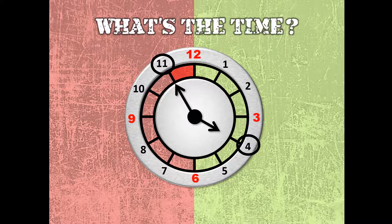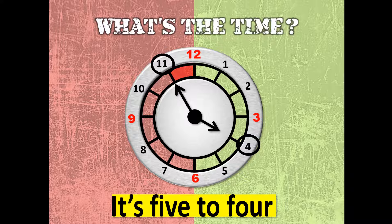What's the time? It's five to four. Why five to four? Because from eleven to twelve is five minutes only. So five minutes more it will become four o'clock. Or you can say it's three fifty-five. Three fifty-five or five to four. Five minutes more it will become four o'clock.